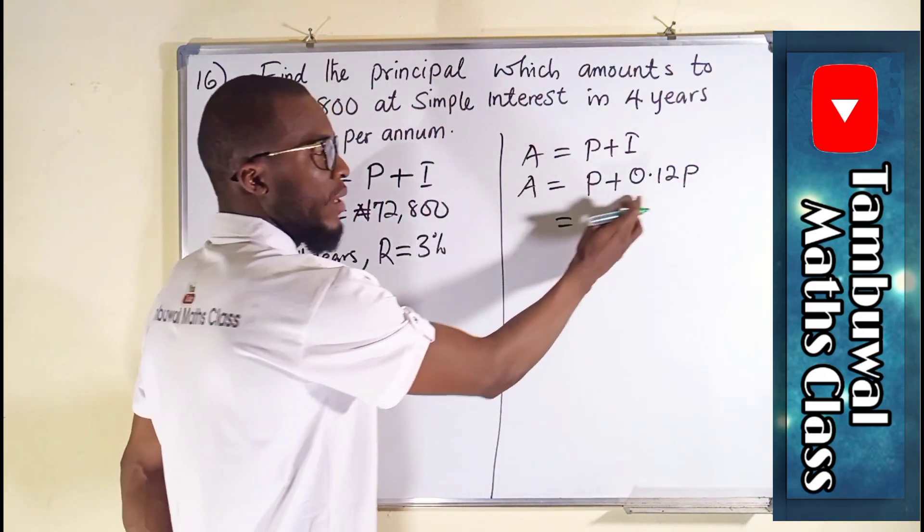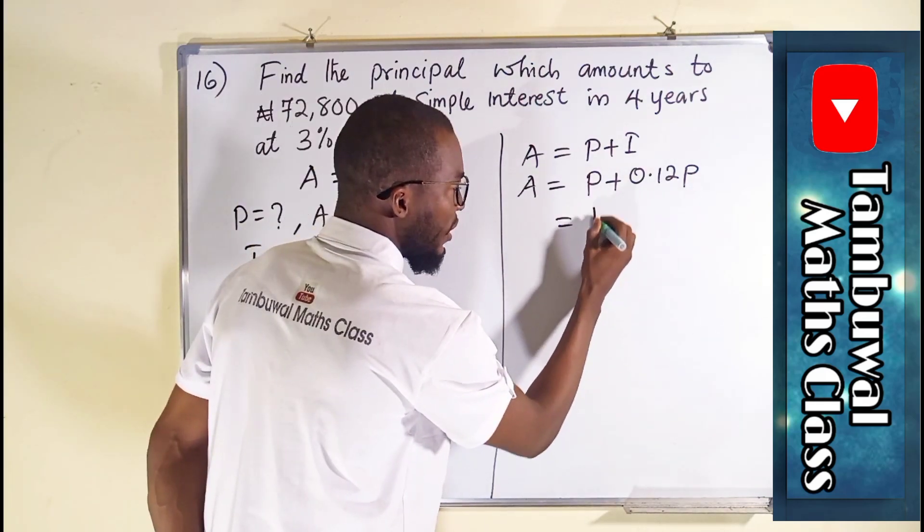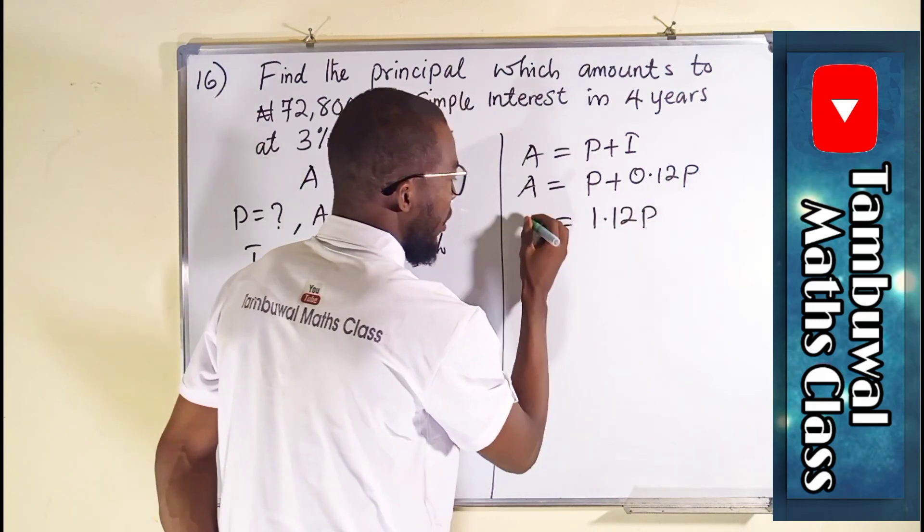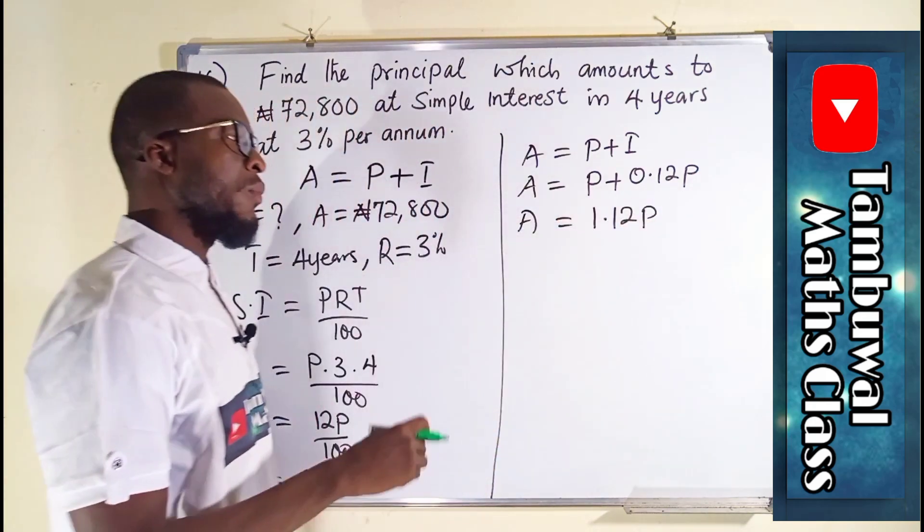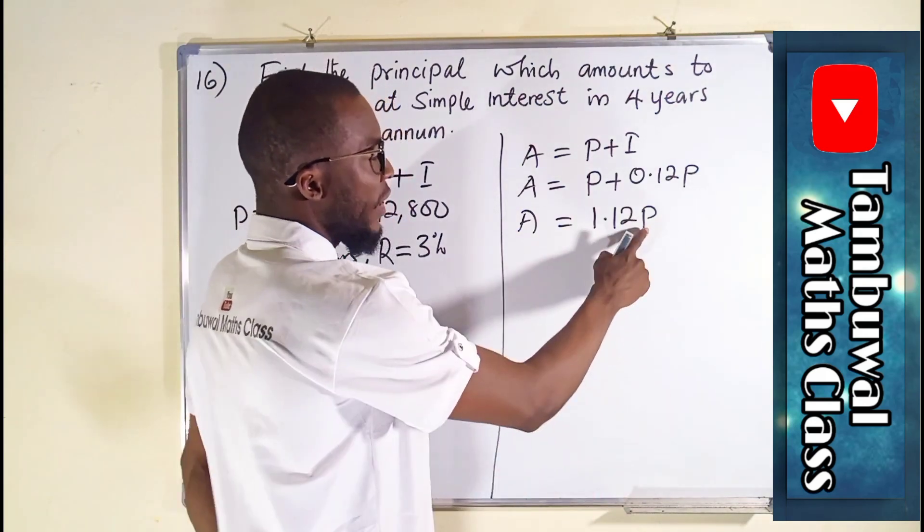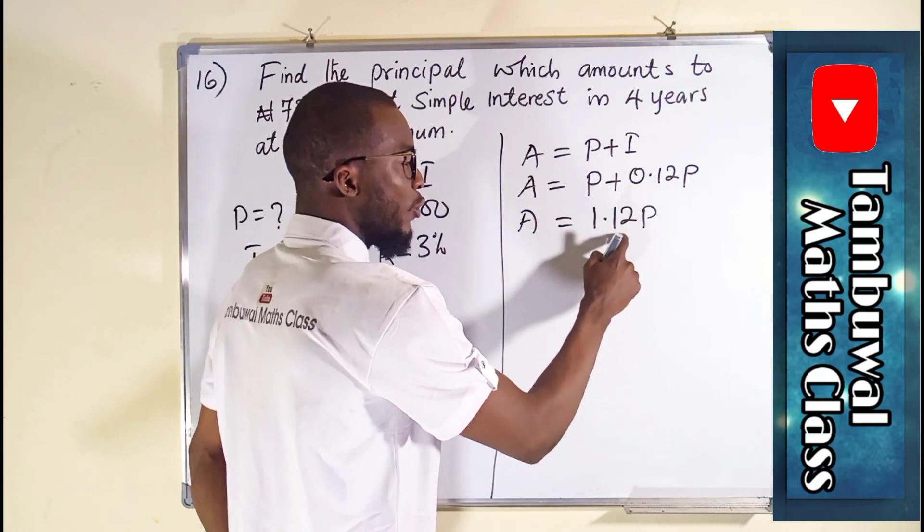This is just a single P, while this is 0.12P. If you add them together, you're going to obtain 1.12P. And this is A. Remember, our target is here. This is what we are looking for. So to find P, we can divide both sides by 1.12.